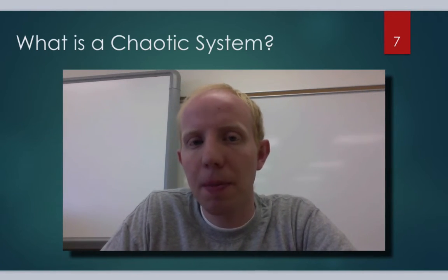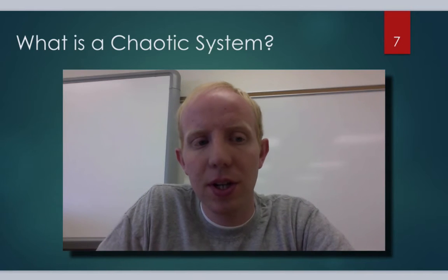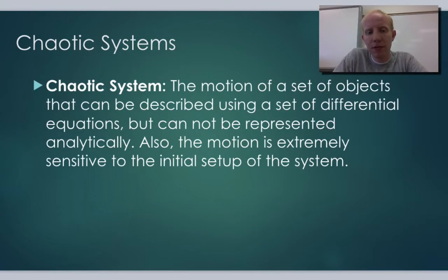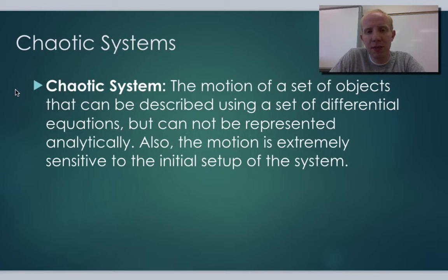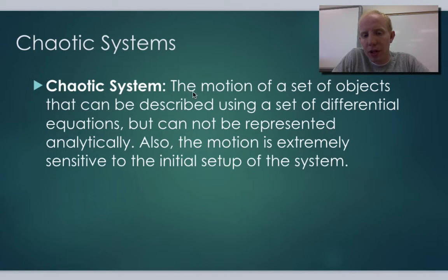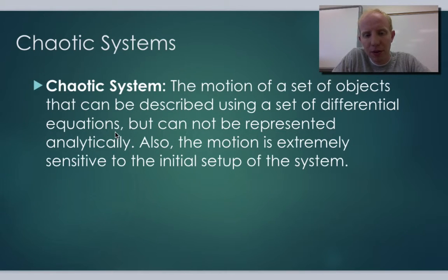Differential equations sometimes don't have analytical solutions. So how does that relate to chaos theory? It comes into our definition of what a chaotic system is. A chaotic system is when you have the motion of a set of objects that you can describe using a set of differential equations, but they cannot be represented analytically.